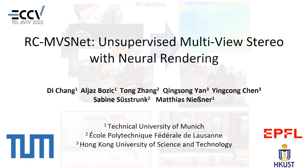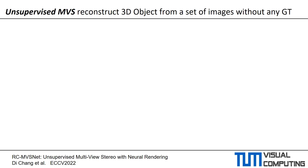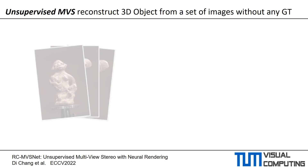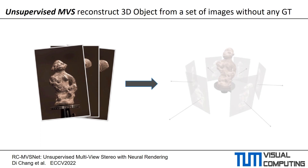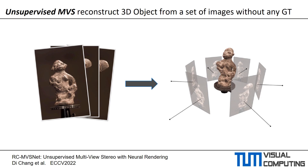We present RCMVSnet, a neural rendering based unsupervised multi-view stereo 3D reconstruction approach. Unsupervised multi-view stereo aims to reconstruct a 3D object from multi-view images and corresponding camera parameters without any ground truth labels.